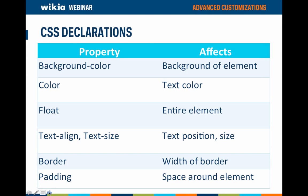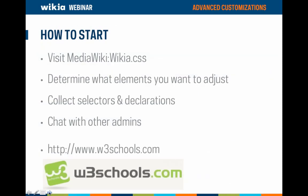A declaration defines how the selector will appear — its color, size, alignment, or other characteristics. Here is a chart of common declarations you'll see on CSS pages: background-color, which applies to the background of the element; color, which applies to the font or text color; float, which tells the element where to appear on the page; text-alignment; and border width and padding. There are many other declarations, but these are among the most common. To get started, go to your wiki's Wikia.css page. Start with just a couple of elements and add complexity as you become more experienced. Research the HTML codes for your selectors and decide what declarations you plan to make.